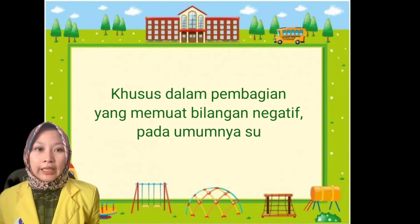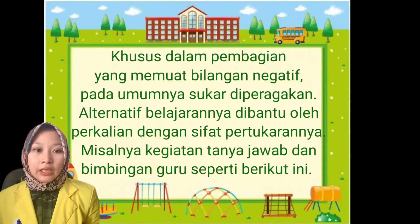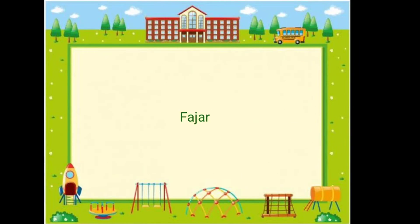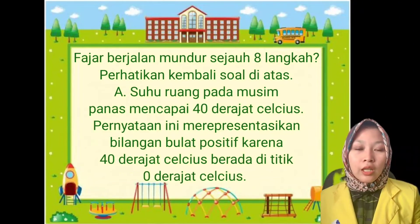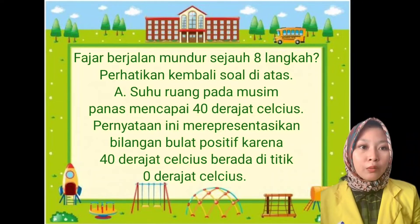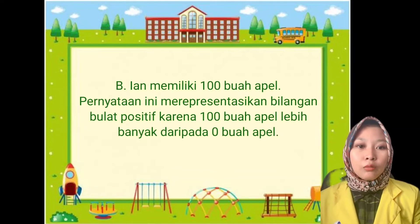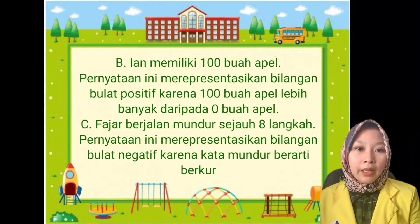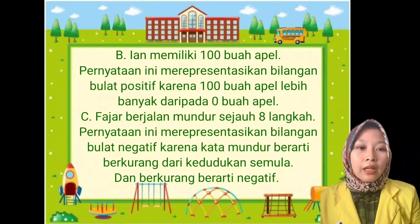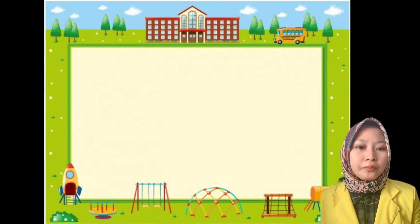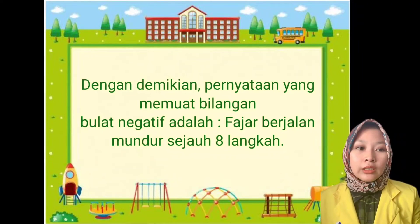Khusus dalam pembagian yang membuat bilangan negatif, pada umumnya suka diperagakan. Alternatif pelajaran dibantu oleh perkenalan dengan sifat pertukarannya. Misalnya, kegiatan tanya-jawab dan dibimbing seperti berikut ini. Fajar berjalan maju sejauh 8 langkah. Perhatikan kembali soal di atas. A: suhu ruang pada musim panas mencapai 40 derajat Celcius. Pernyataan ini mempresentasikan bilangan bulat positif karena 40 derajat Celcius berada di atas titik 0 derajat Celcius. Pian memiliki 100 buah apel. Pernyataan ini mempresentasikan bilangan bulat positif karena 100 buah apel lebih banyak daripada 0 buah apel. Yang selanjutnya, Fajar berjalan mundur sejauh 8 langkah. Pernyataan ini mempresentasikan bilangan bulat negatif karena kata mundur berarti berkurang dari kedudukan semula dan berkurang berarti negatif. Dengan demikian, pernyataan yang mempresentasikan bilangan bulat negatif adalah Fajar berjalan mundur sejauh 8 langkah.